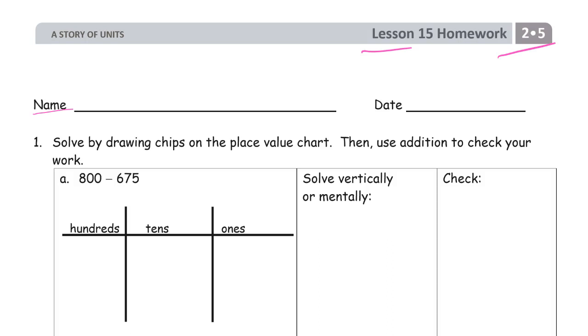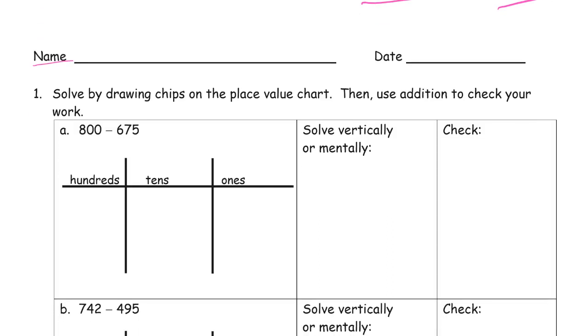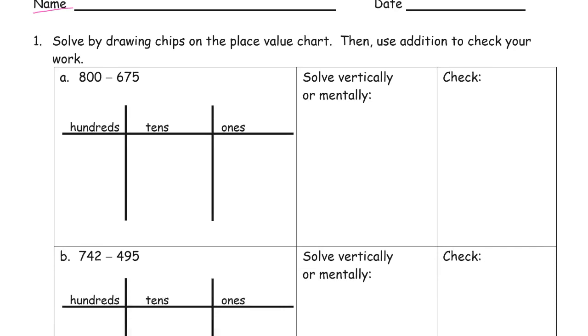And we're solving by first drawing chips on the place value chart and then using addition to check subtraction.